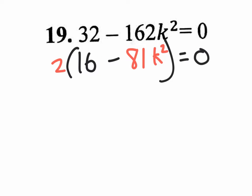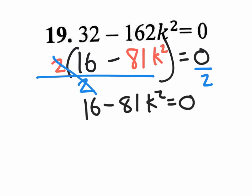But before doing that — because it's an equation, and only because it's an equation — we are able to do anything we want as long as we do it to both sides. So I could divide by 2 to get rid of that factored-out 2, and divide by 2 on the other side. The new equation is 16 minus 81K squared equals 0. And now we truly have the difference of two squares.